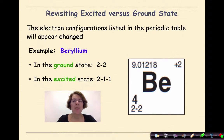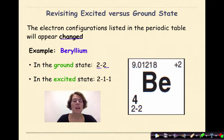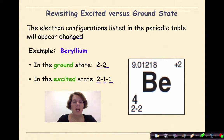The electron configurations listed on the periodic table will appear changed. For example, beryllium. In the ground state, beryllium is 2-2: two electrons in the first shell, two electrons in the second shell. In the excited state, we see an electron configuration of 2-1-1. This means an electron from the second shell has jumped up to the third shell. This is an excited state because it does not match the ground state electron configuration. This is a very unstable state, and ultimately these electrons will return to ground state.